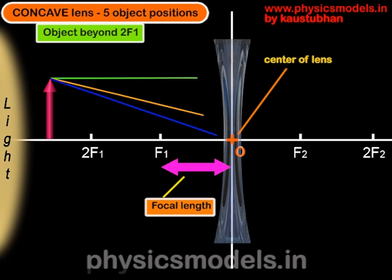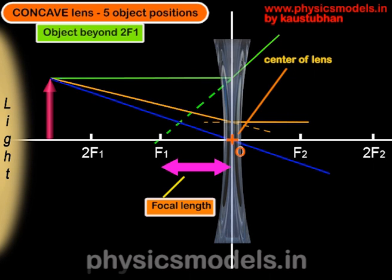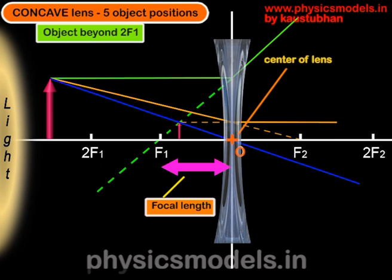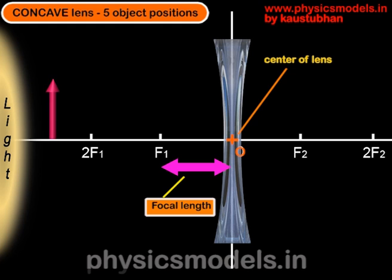The orange ray is new here. It's aimed towards F2 on the right-hand side, and it behaves opposite to the green ray. Because it's aimed at the focal distance F2, it emerges after refraction as a ray parallel to the principal axis. The blue ray passes through O without refraction. When we project these rays backwards, they all intersect at a point which is the top of the arrow image. So we get an image that's virtual, erect, and diminished, and the position of the image is between O and F1.